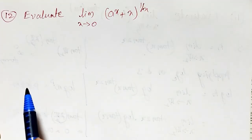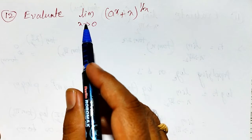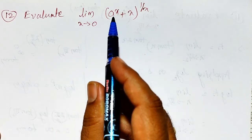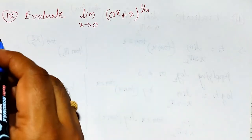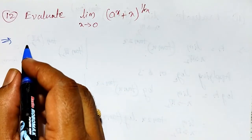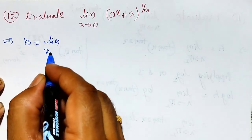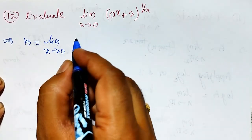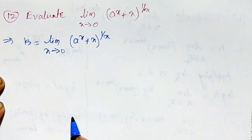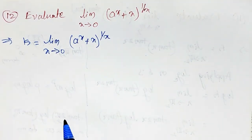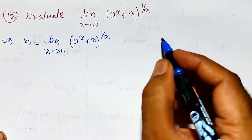In this video, one more important example I am going to evaluate: the limit as x tends to 0 of (a raised to x plus x) whole raised to 1 by x. To evaluate this, let me call this equal to k — k is equal to the limit as x tends to 0 of (a raised to x plus x) whole raised to 1 by x.